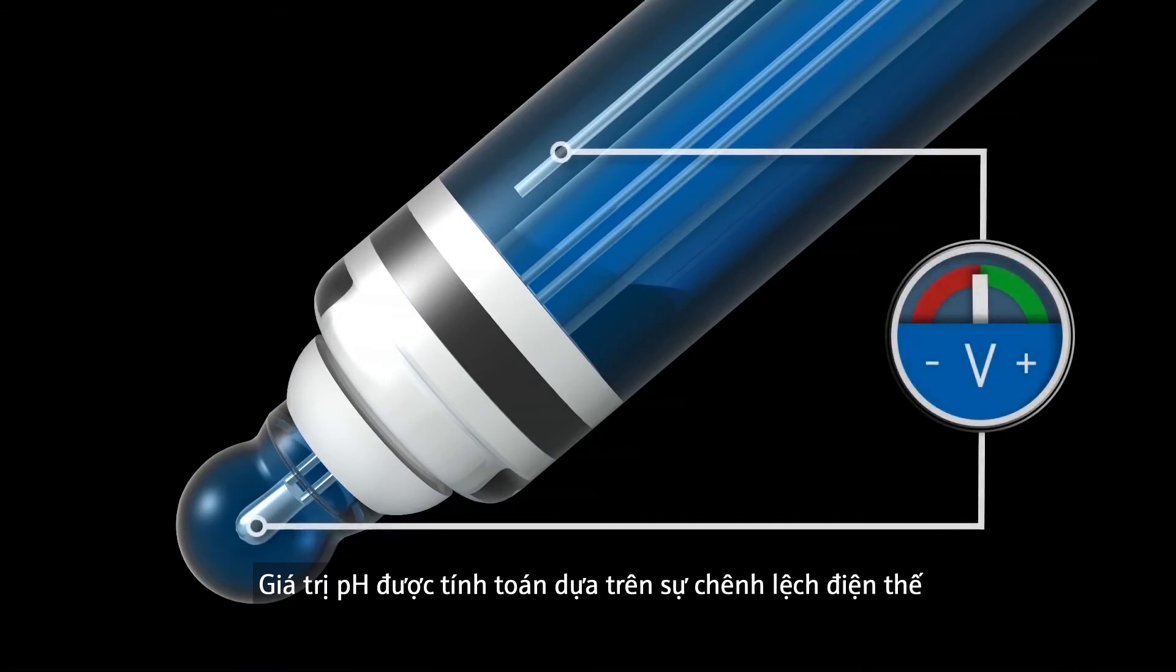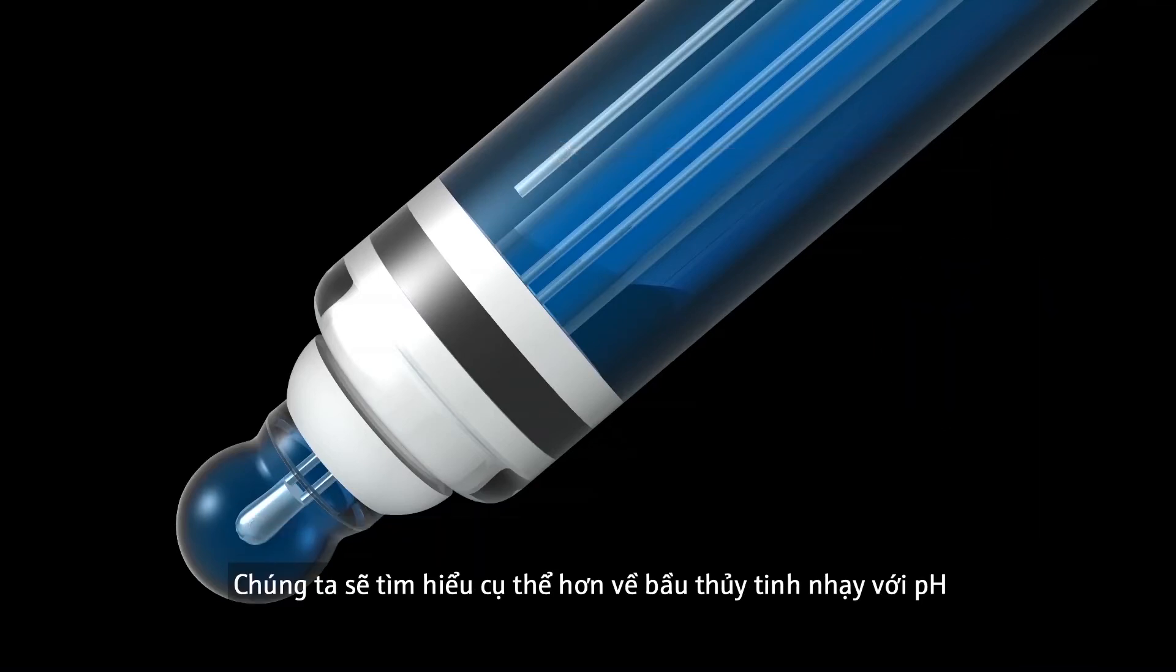The pH value is calculated from the potential difference between the reference system and the measuring system. Let's take a closer look at the pH sensitive glass bulb to understand how this potential difference is formed.